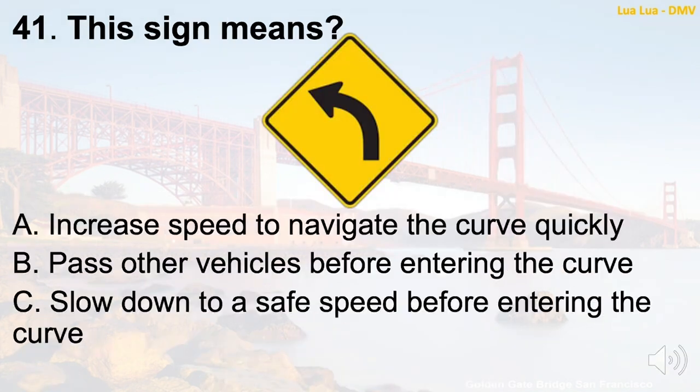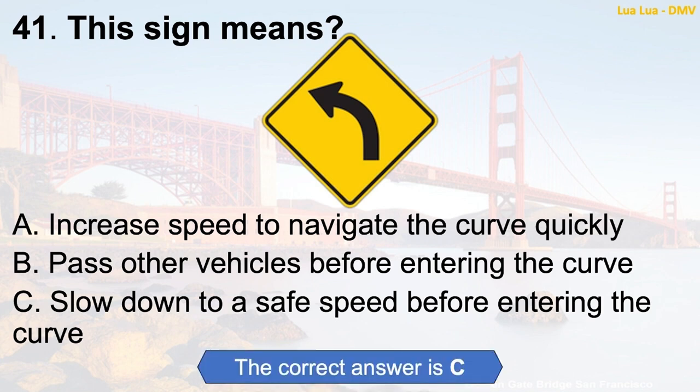Question 41: This sign means — A. Increase speed to navigate the curve quickly. B. Pass other vehicles before entering the curve. C. Slow down to a safe speed before entering the curve. The correct answer is C: Slow down to a safe speed before entering the curve.